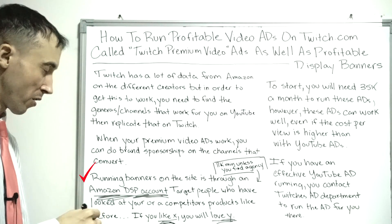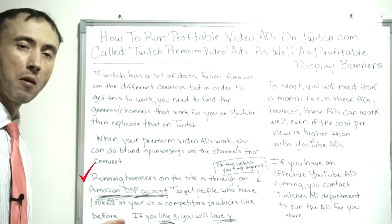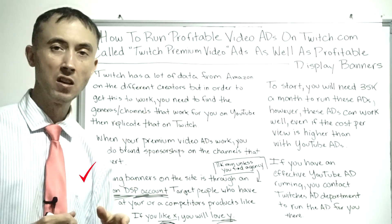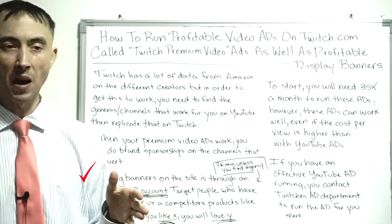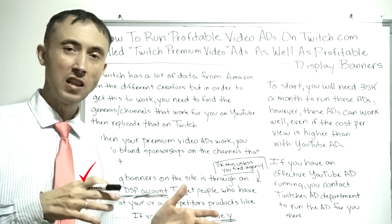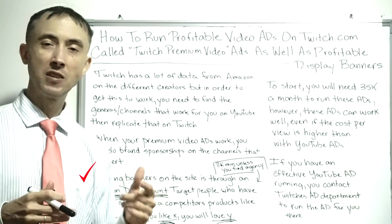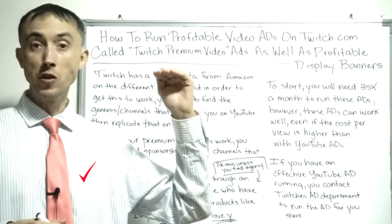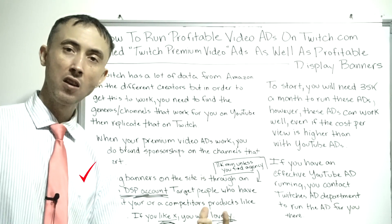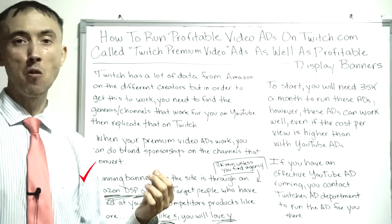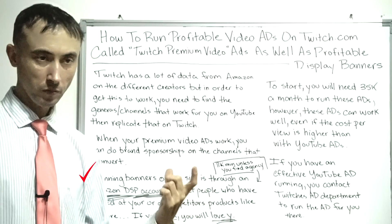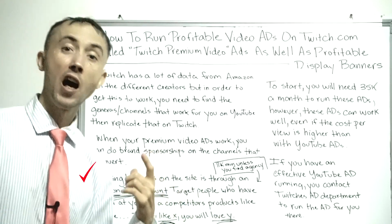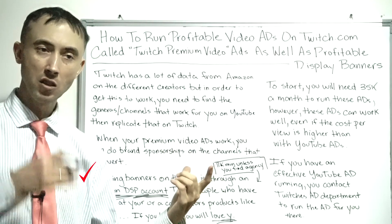If someone is looking at your exact products on Amazon, you definitely want to run Twitch banner ads for those people to close the deal — that's generally always going to make money since they only need a little nudge. In that case, instead of just showing the product and price again, come at them with the top two or three reasons people don't buy and explain why those aren't a worry. For example, if people worry it won't work, say you have over a thousand happy customers in your Facebook group with a link to it.